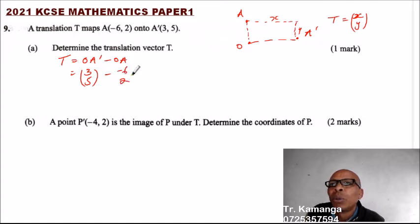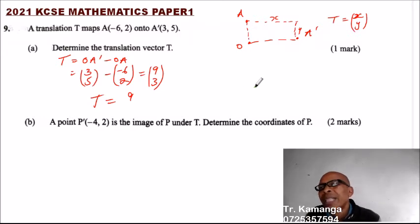That gives you 3 minus (-6), which is 3 plus 6, giving you 9. And 5 minus 2 is 3. So T equals (9, 3) - you move 9 steps on the positive side of the x-axis and 3 units along the y-axis.